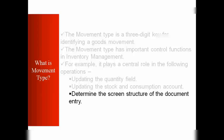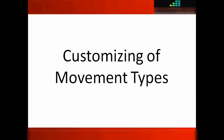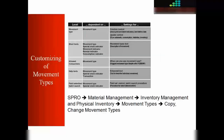Depending on what movement type you use, the system will populate different fields. For some movement types, the system will ask you to enter a mandatory vendor; for others, it will ask you to enter a reason for the movement. The screen, the fields, and the mandatory fields may all be different depending on the movement type used.